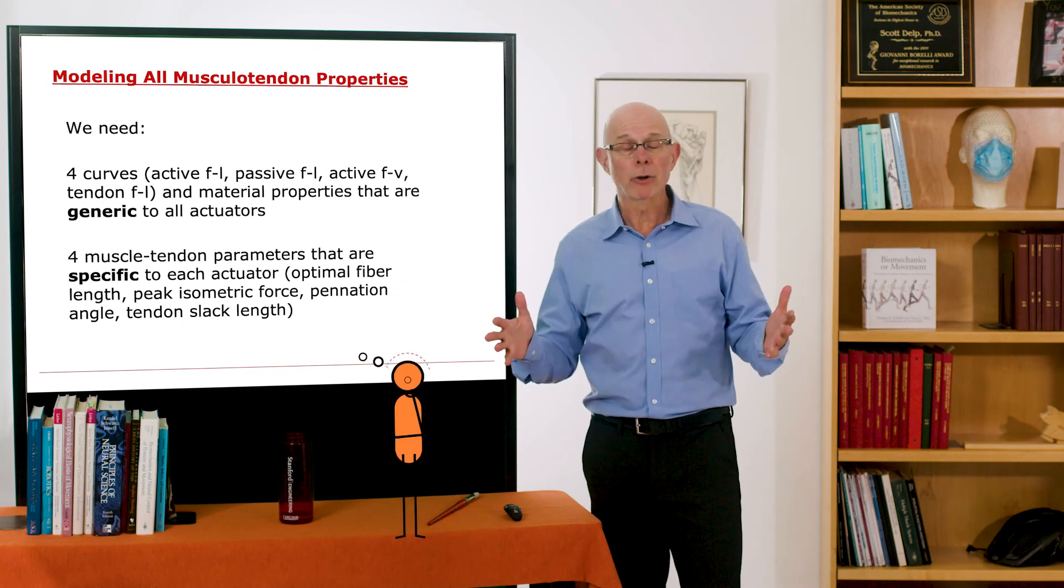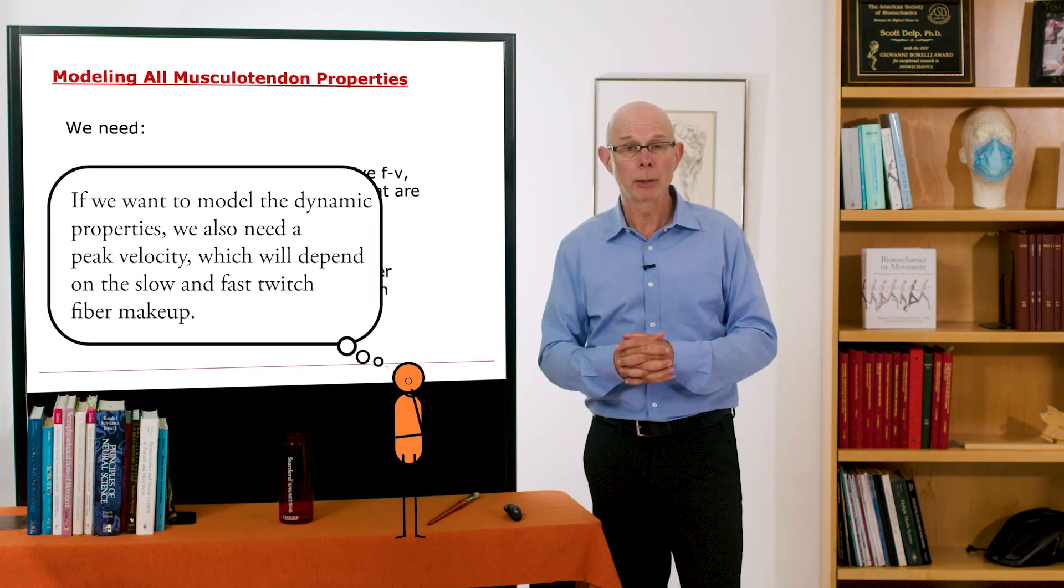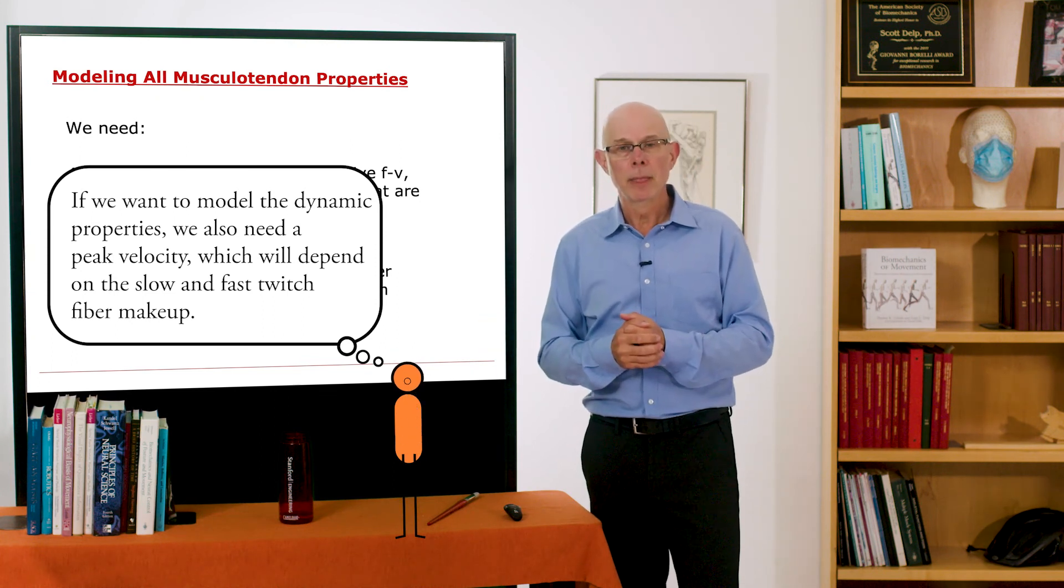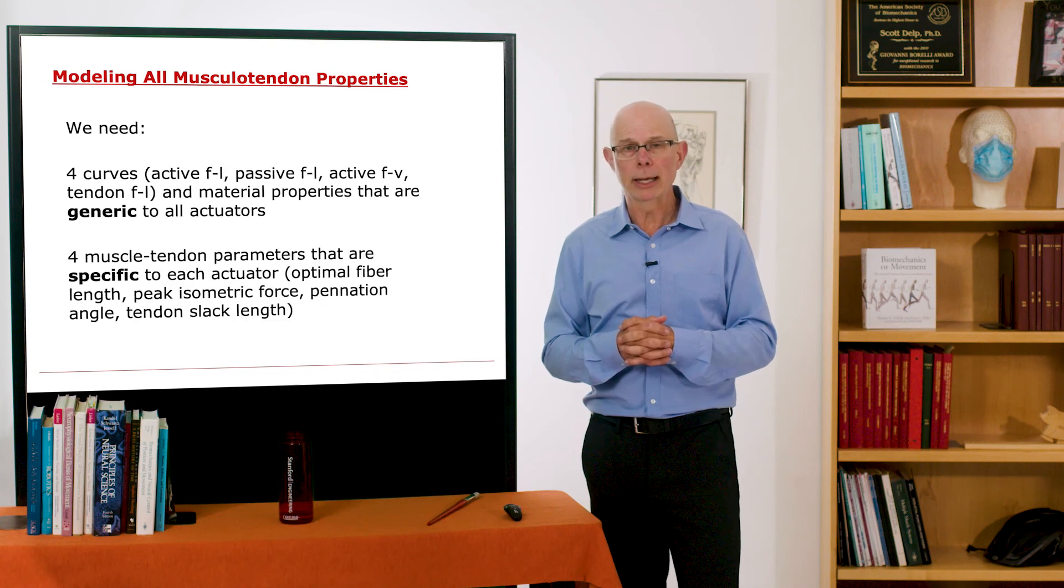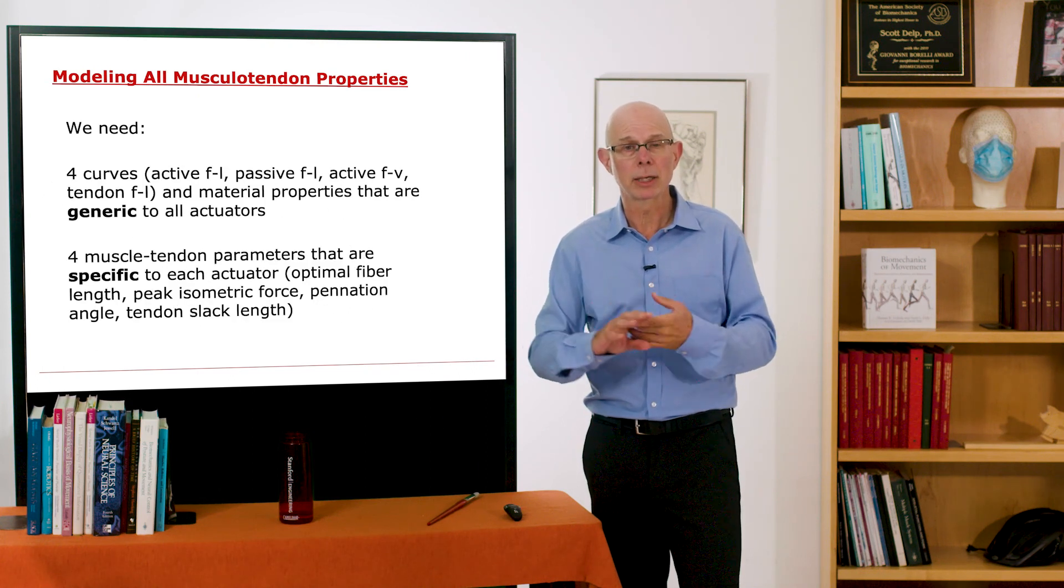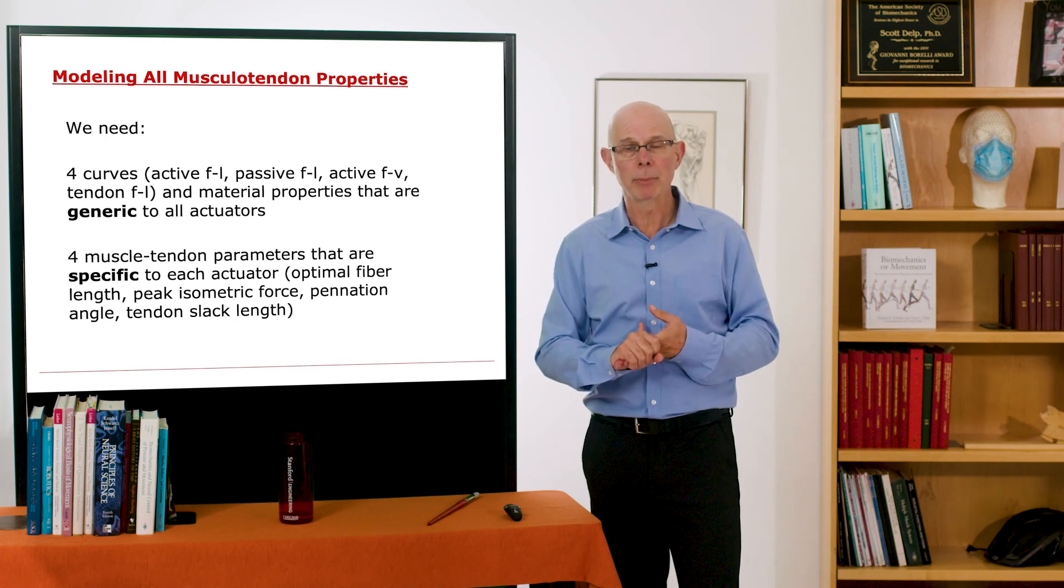Now if we wanted to model the dynamic properties, we also need a peak velocity. And that might depend on how much slow twitch and fast twitch. That we can get into a little bit later. But it's a powerful approach to take a generic muscle tendon complex and scale it to represent any muscle in the body.